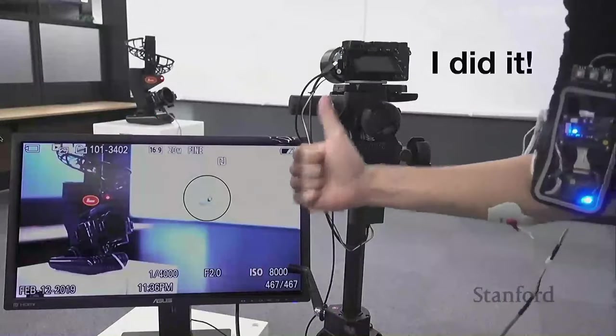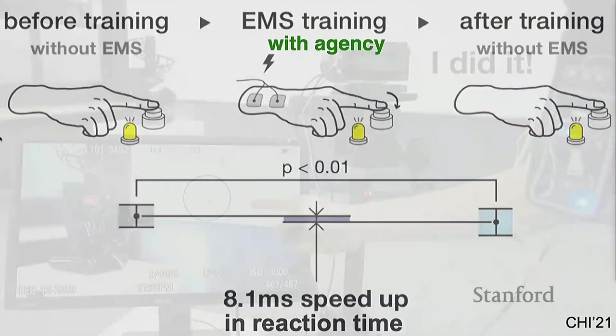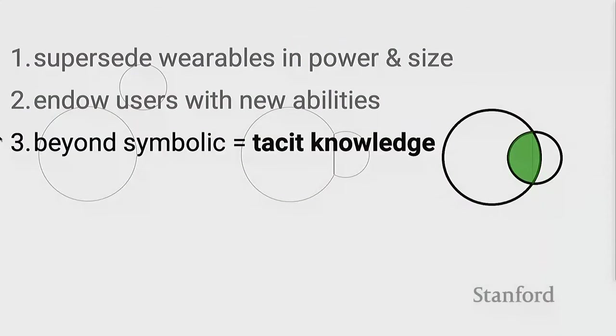If you take the electrodes out, that physical training remains in muscle memory. I think this is really interesting — it moves us from computers being powerful tools for symbolic manipulation and reasoning to also being ways to access tacit knowledge: the ways we do things with our fingers and body in space. That's kind of where we're at right now.